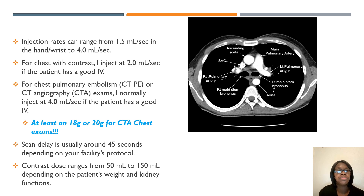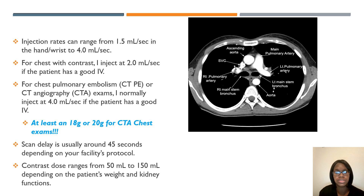Injection rates will vary — anywhere from 1.5 to 4 milliliters per second. If injecting in the hand or wrist, it can only be for a regular CT exam. For a CTA study, you cannot inject at three or four milliliters per second in the hand or wrist. It is better to start the IV in the AC, which is required for angio studies — at least an 18 or 20 gauge for CTA exams. Always go by the patient's weight and kidney function when giving contrast, and check with the radiologist if you need to reduce the rate.